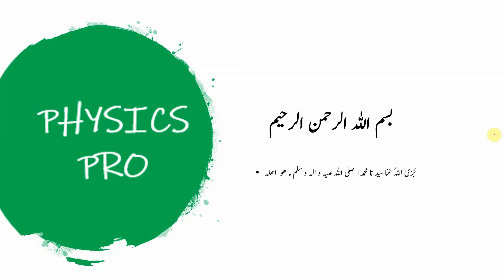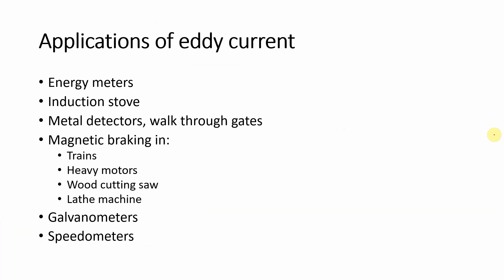Bismillah ar-Rahman ar-Rahim. Applications of Eddy current — eddy current کہاں use ہوگا: Energy meters میں، Induction stove کے اندر، Metal detectors، Walkthrough gates، Magnetic braking کے اندر — trains میں، Heavy motors میں، Wood cutting machine میں، Lathe machine میں، Galvanometer میں، Speedometer وغیرہ میں۔ Let us start.